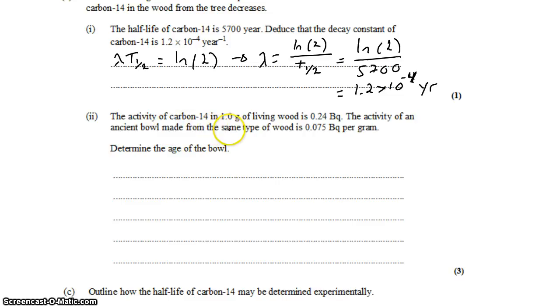Next part says that the activity of carbon-14 in one gram of living wood is a quarter of a becquerel. But the activity of an ancient bowl made from the same type of wood is much less. We want to use this information to determine the age of the bowl, which should be possible, because once the tree stops growing, it stops adding carbon-14 to itself. And so that carbon-14 starts to decay away, its activity decreases. So we can use the change in activity to find out how long ago the tree died and was made into a bowl.